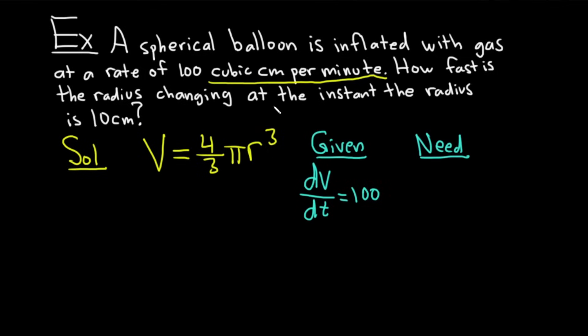How fast is the radius changing at the instant the radius is 10 centimeters? That's the rate of change of r with respect to time, dr/dt. We want that at the very instant in time when the radius is 10. So r equals 10. This notation just basically means that we want to evaluate dr/dt at r equals 10. All right, good stuff. Let's finish up.